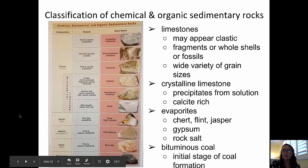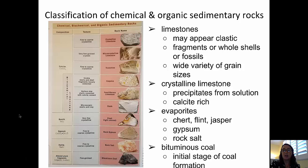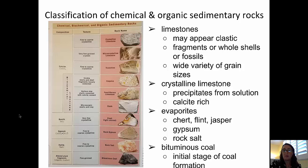Turning now to the classification of chemical or organic sedimentary rocks. First, we have some limestones which may appear to be clastic because they are made up of fragments, shells, or fossils, and they have a wide variety of grain sizes. Some are very young and are made up of young pieces of shells that have washed around on a beach, such as coquina, and some are older, being made up of well-cemented fossil grains.